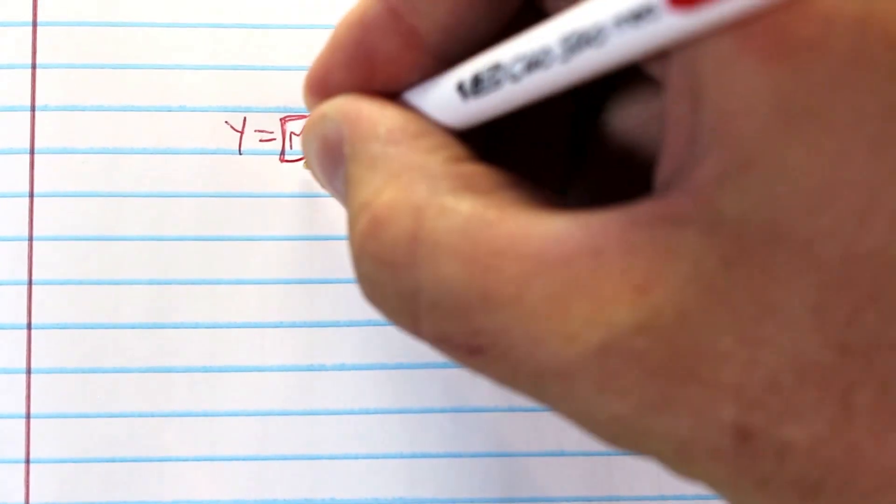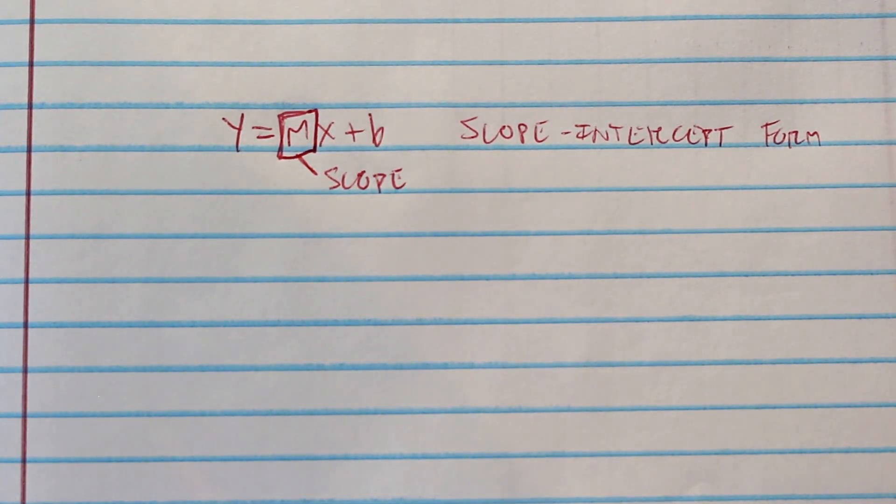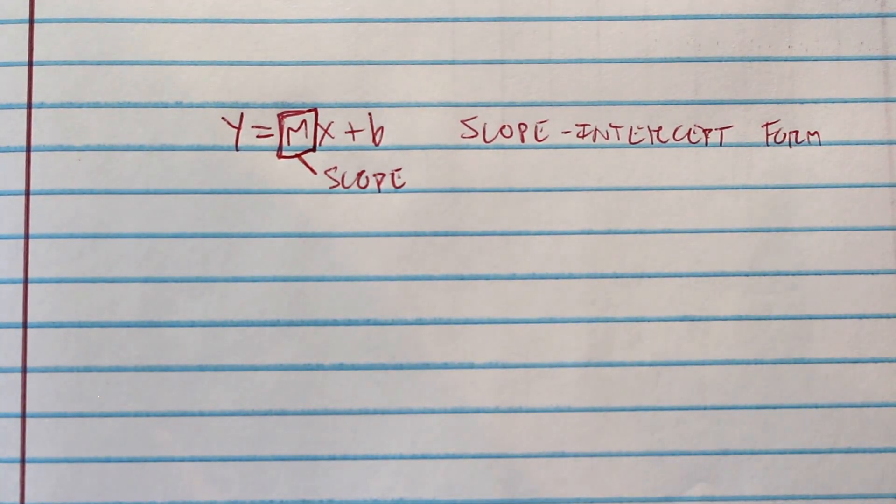So in this equation, y is a y value, x is an x value, but m, this is what we want. This is the slope. So if the equation is given in slope-intercept form, the slope is the value in m's place.